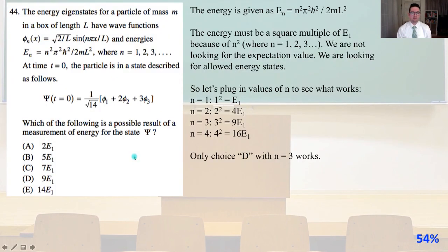Number 44. The energy eigenstates for a particle of mass M in a box of length L have wave functions phi_n(x) = sqrt(2/L) * sin(nπx/L), and energy E_n = n²π²ℏ²/(2ML²), for n = 1, 2, 3, ... At time T equals 0, the particle is in a state described as follows: psi(0) = (1/sqrt(14)) * (phi_1 + 2*phi_2 + 3*phi_3).